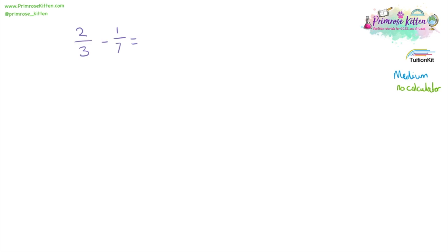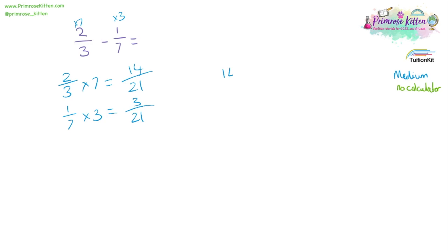Two over three minus one over seven. We're going to times the first one by seven and the second one by three. Two over three times seven: seven times two is 14, three times seven is 21. One over seven times three: one times three is three, seven times three is 21. So we have 14 over 21 minus three over 21, which gives 14 minus three over 21, equalling 11 over 21.